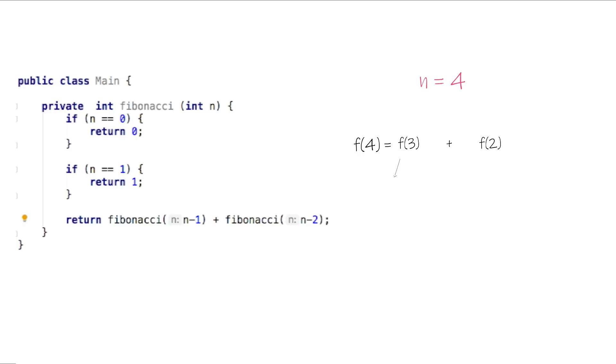To calculate Fibonacci 3, again, n is not 0, n is not 1, then we return the Fibonacci 2 plus Fibonacci 1.